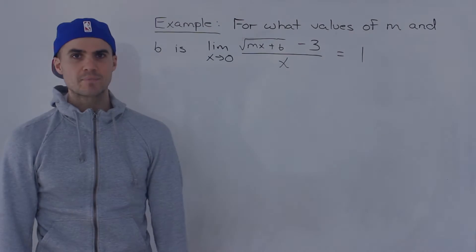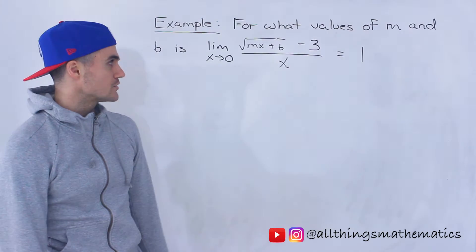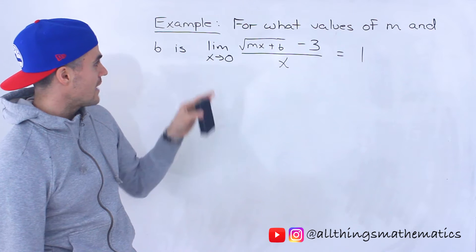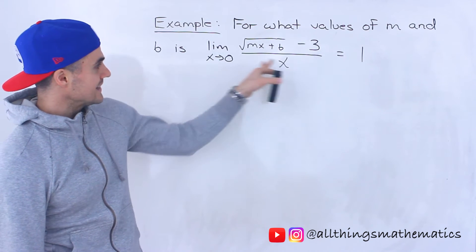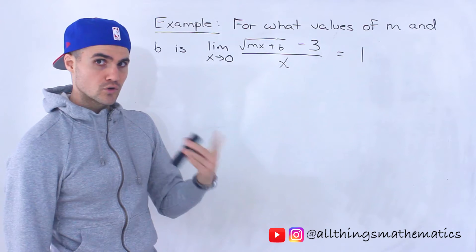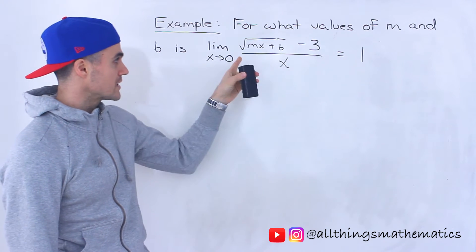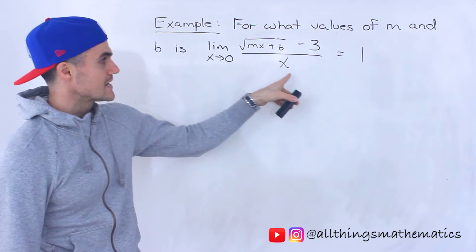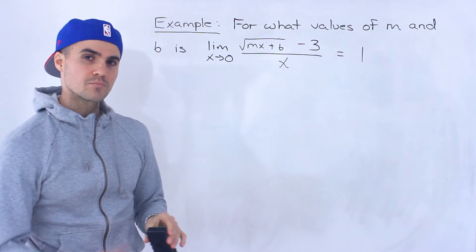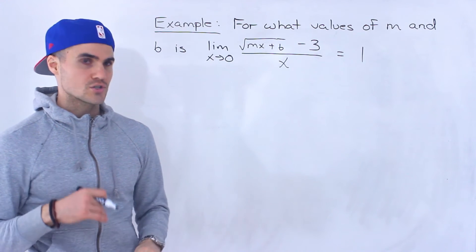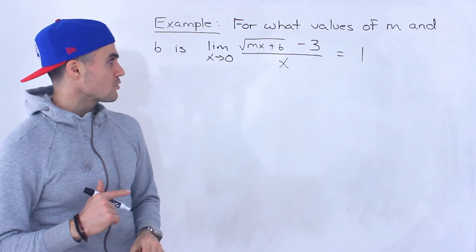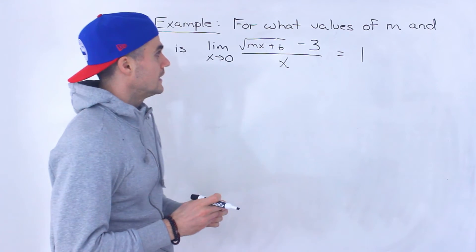Yo, what's up everyone? Welcome back. Patrick here. Moving on to the next question. We have to find the values of m and b. The limit as x approaches 0 of the square root of mx plus b minus 3, all over x, is equal to 1. This is a pretty cool question — a student sent it to me, thought it was pretty unique, so I thought I would make a video solution for it.